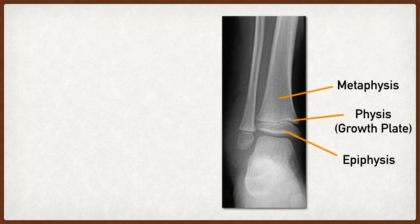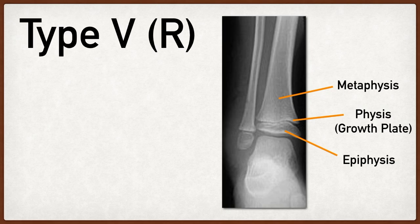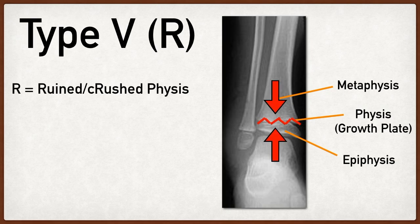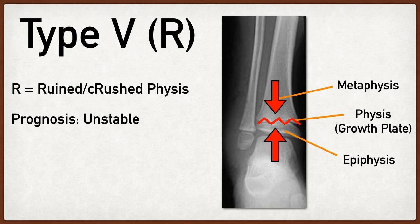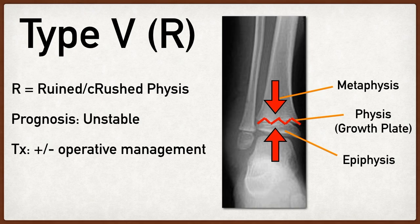A type 5 Salter Harris fracture is a crush injury to the physis, and the way to remember this is to use the letter R in SALTER, which will help you remember ruined or crushed. Similar to a type 4 Salter Harris fracture, these fractures can be unstable and lead to limb length discrepancies, and so operative management should be considered.